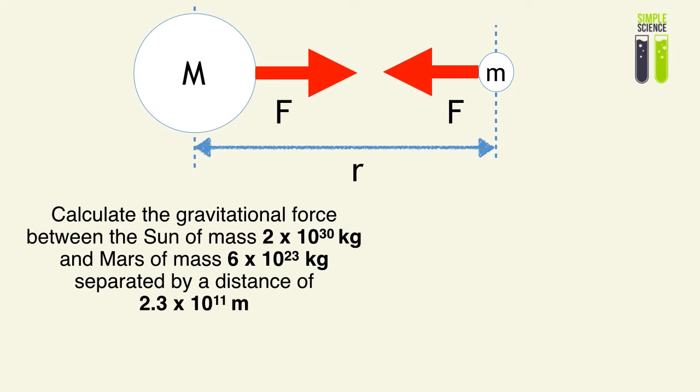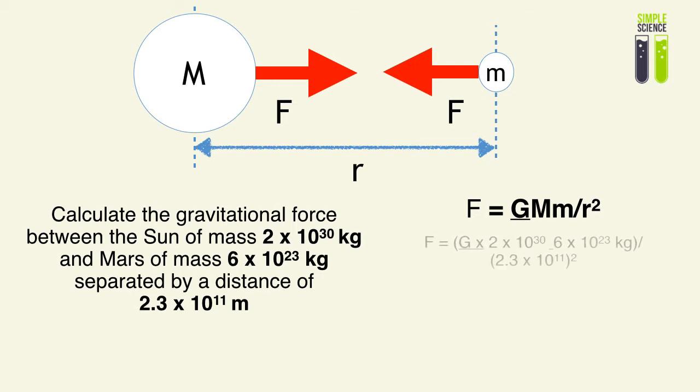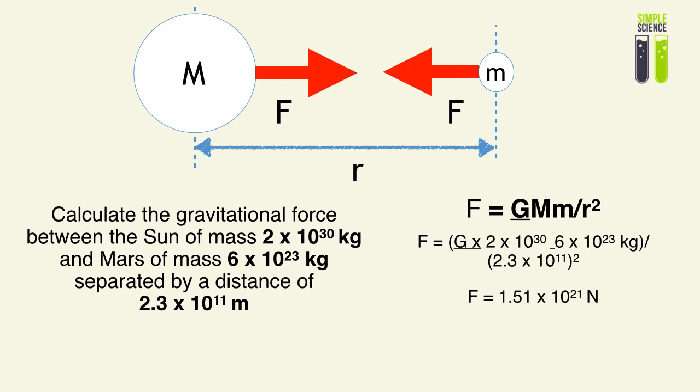Let's look at a question: Calculate the gravitational force between the sun of mass 2 times 10 to the 30 kilograms, and Mars of mass 6 times 10 to the 23 kilograms, separated by a distance of 2.3 times 10 to the 11 meters. Using F equals GMm over r squared, substituting in G times 2 times 10 to the 30, times 6 times 10 to the 23, divided by 2.3 times 10 to the 11 squared, you get 1.51 times 10 to the 21 newtons — that's the force between the sun and Mars.